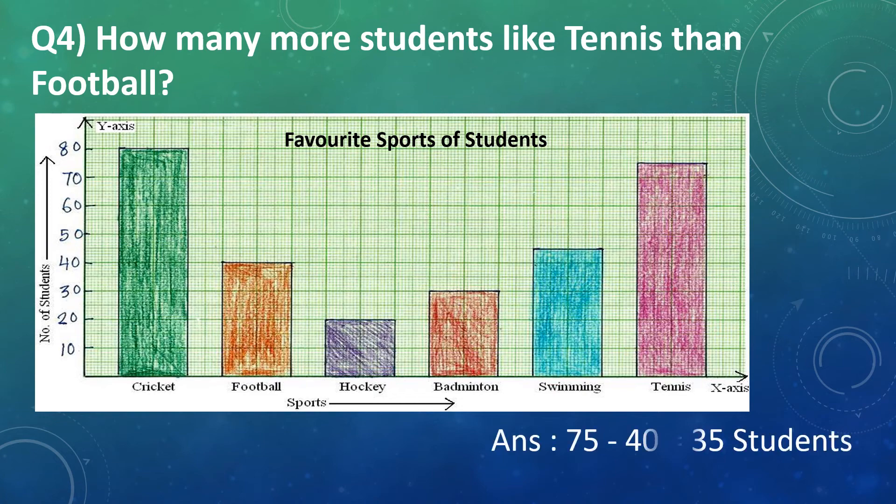So, 75 minus 40 is equal to 35. Therefore, 35 more students like to play tennis than football.